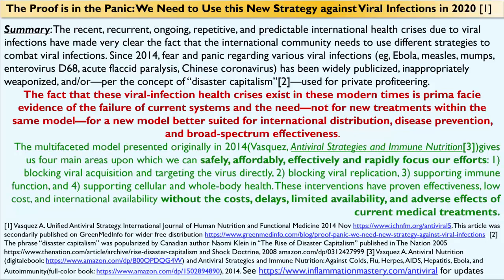The multifaceted model originally presented in 2014 in my book Antiviral Strategies and Immune Nutrition — also published as Antiviral Nutrition as a digital e-book — gives us four main areas upon which we can safely, affordably, effectively, and rapidly focus our efforts: number one, blocking viral acquisition and entry by targeting the virus directly; number two, blocking viral replication with specific nutrients such as vitamin D, selenium, and acetylcysteine; number three, supporting immune function with nutrients such as acetylcysteine and glutamine; and number four, supporting cellular and whole-body health with nutrients such as coenzyme Q10.